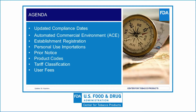The topics we will be discussing today include an update on the dates to meet certain requirements, which have been revised; the Automated Commercial Environment, also known as ACE, and which data elements are and are not required when importing a regulated tobacco product; establishment registration; importation of regulated tobacco products for personal use; prior notice for the importation of regulated tobacco products; product codes; tariff classification and HTS codes; and user fees.